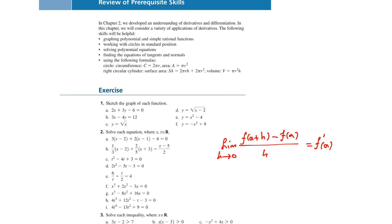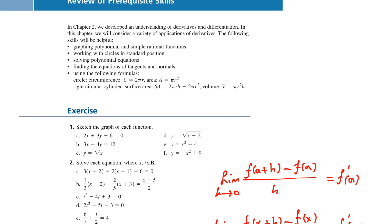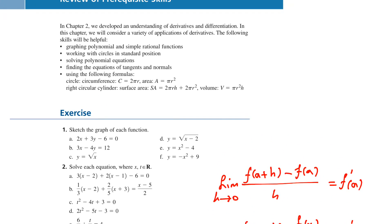The slope of the tangent line exists if the function is continuous at x equals a. In Chapter 2, we developed the understanding of the limit of f(x+h) minus f(x) over h as h approaches 0, and we defined it as the derivative of f(x). We emphasized that finding this limit is time-consuming and hard, therefore we came up with some formulas.